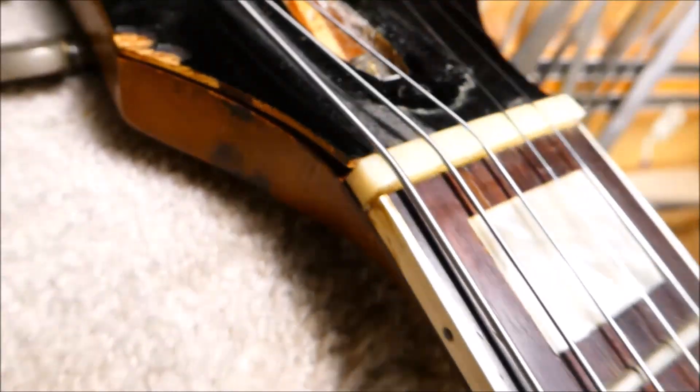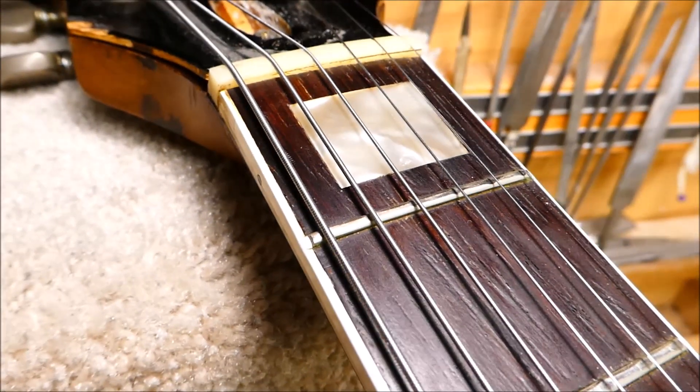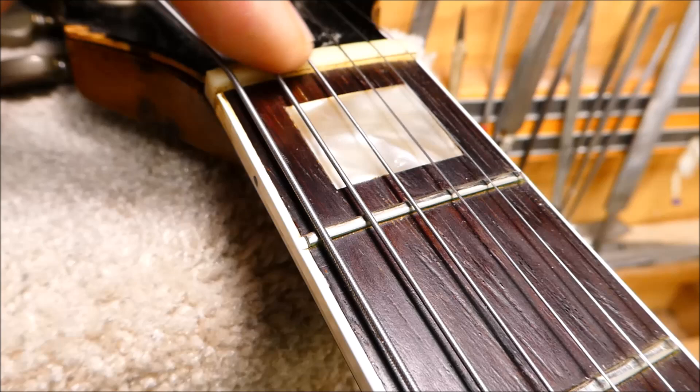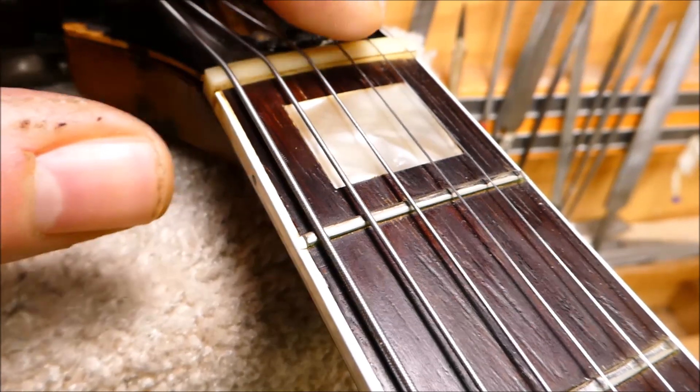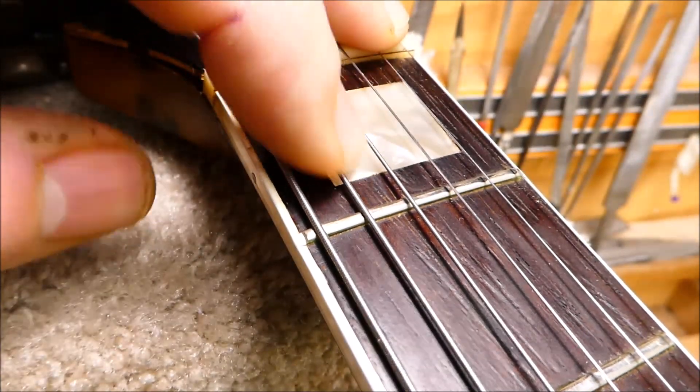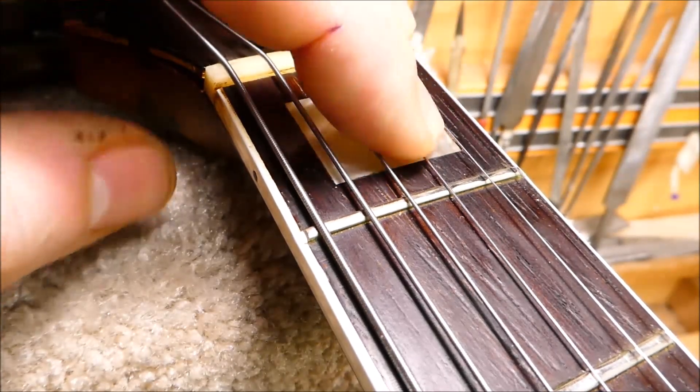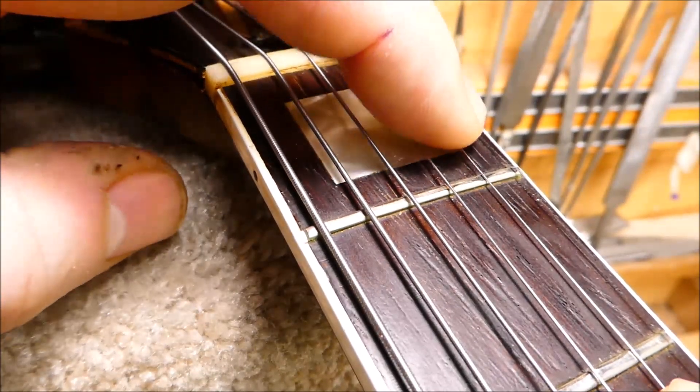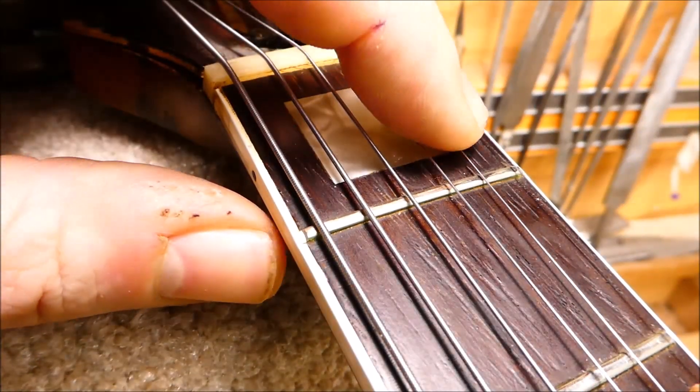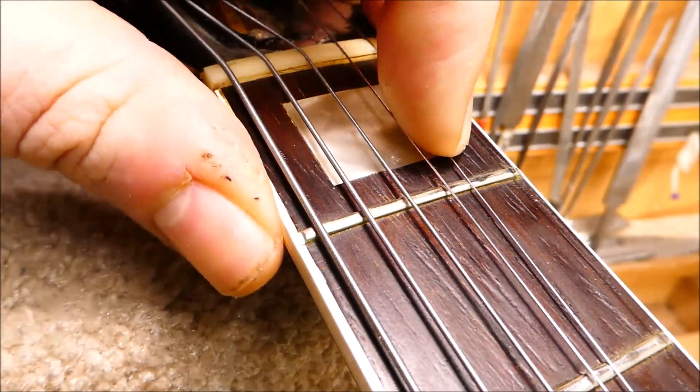I think this has had a new bone nut installed at some point. You can see the pencil line on the front edge of the nut. In terms of string height, it's okay. The G and the B are a little tall. We can lower that and also dress out some of this fret munch.